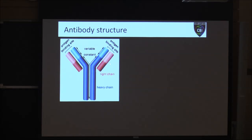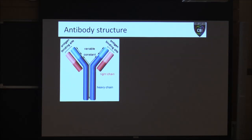At the end of each light chain and each heavy chain there's the antigen binding site, also referred to as the variable region. This is the sequence of the antibody protein that changes and varies from antibody to antibody in order to recognize different epitopes.